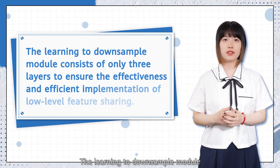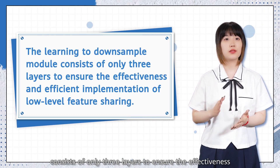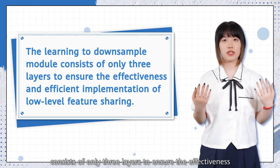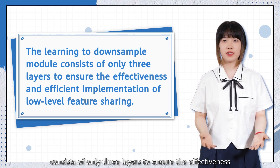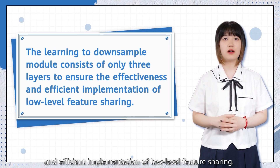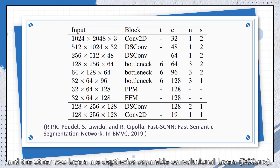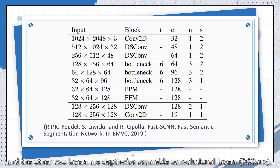The learning-to-downsample module consists of only three layers to ensure the effectiveness and efficient implementation of low-level feature sharing. The first layer is the standard convolutional layer, and the other two layers are depth-wise separable convolutional layers.